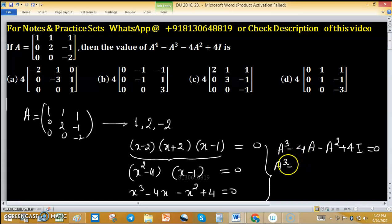A³ minus... sorry, A⁴... A⁴ - A³ - 4A² + 4I... multiplying gives A⁴ - A³ - 4A² + 4A = 0.